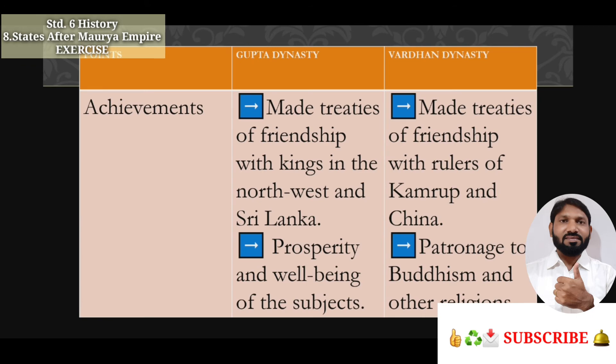Achievements of the Gupta dynasty: they made treaties of friendship with kings in the north-west and Sri Lanka, and ensured prosperity and well-being of the subjects. Achievements of the Vardhana dynasty: they made treaties of friendship with rulers of Kamrup and China, and gave patronage to Buddhism and other religions. Students, here I have mentioned only the important achievements.